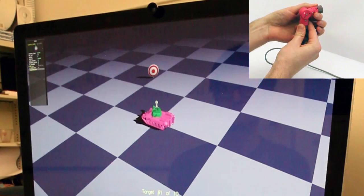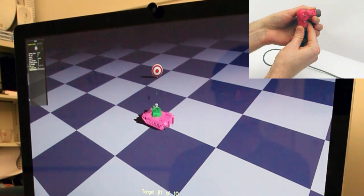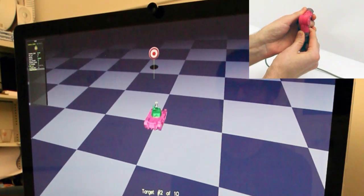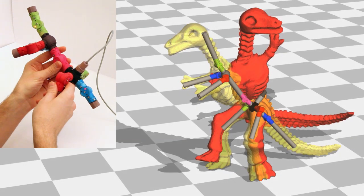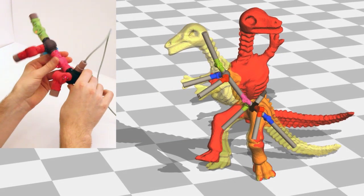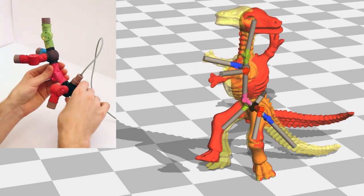We tested our device in two controlled user studies. First we considered a single joint's ability to aim the cannon of a tank. Next we consider how well a complex combination of joints and splitters can reproduce a variety of 3D poses.